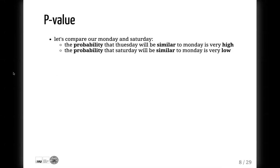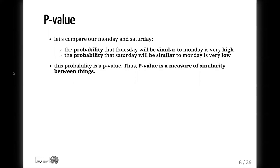Let's compare our Monday and Saturday. The probability that Tuesday will be similar to Monday is very high. And the probability that Saturday will be similar to Monday is very low. This probability is a p-value. Thus, p-value is simply a measure of similarity between things. High p-value means things are similar. Low p-value means things are different.